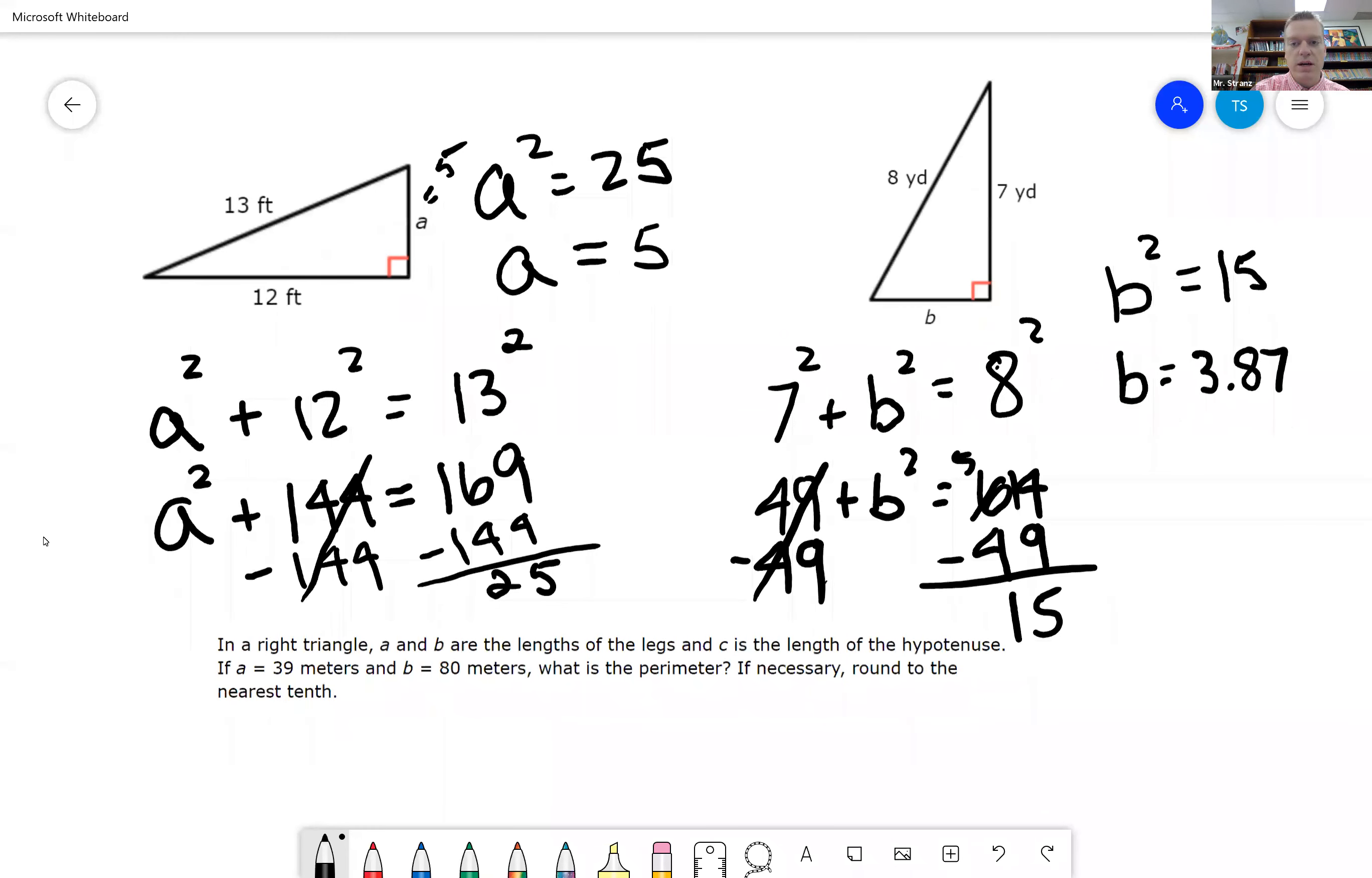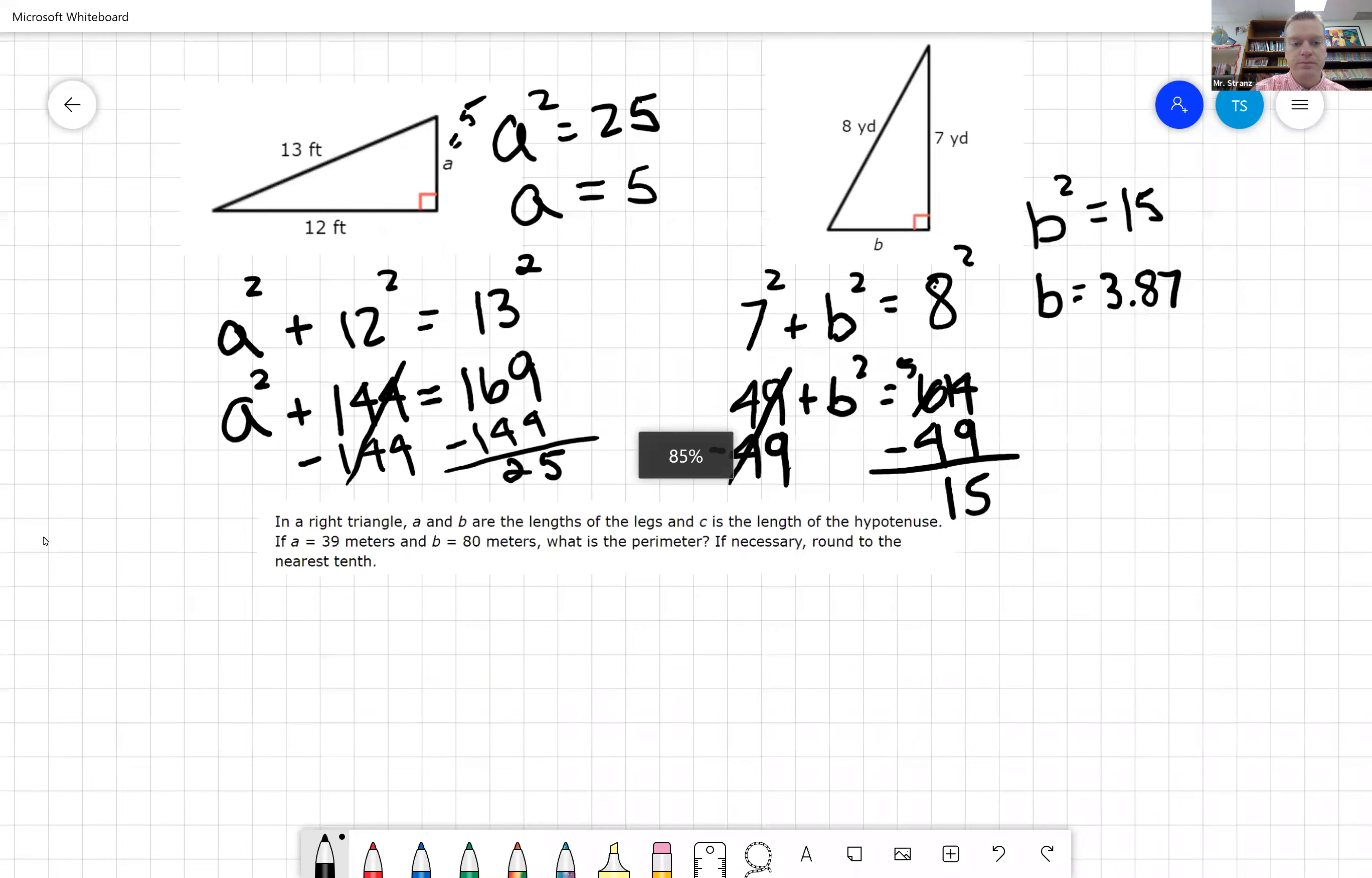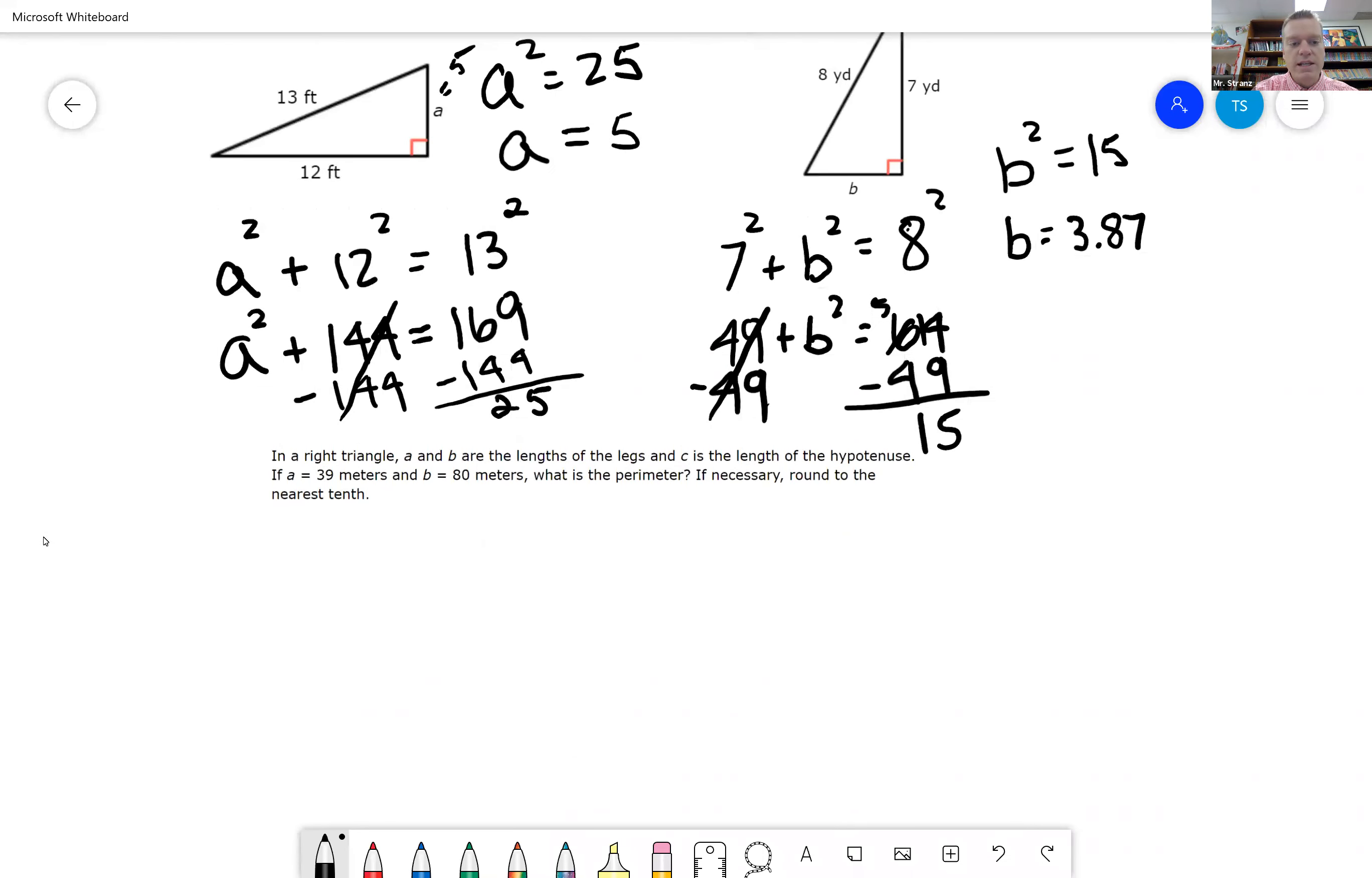And then this last one on the bottom, it is a word problem. So in a right triangle, I'm going to go ahead and draw my right triangle. A and B are the lengths, so this is A, B, and I have hypotenuse C.